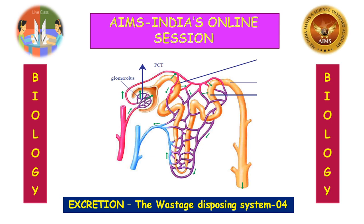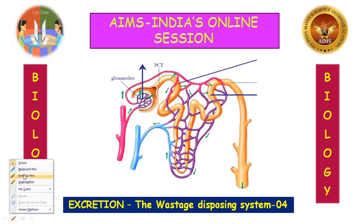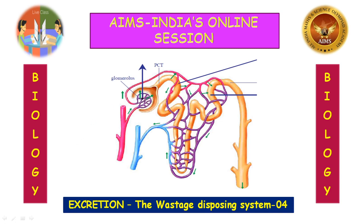The glomerular capillaries are formed by the efferent arteriole. Glomerular filtration does not require the expenditure of energy by kidney cells. The quantity of glomerular filtrate formed each minute in all the nephrons of both kidneys is called the glomerular filtration rate.